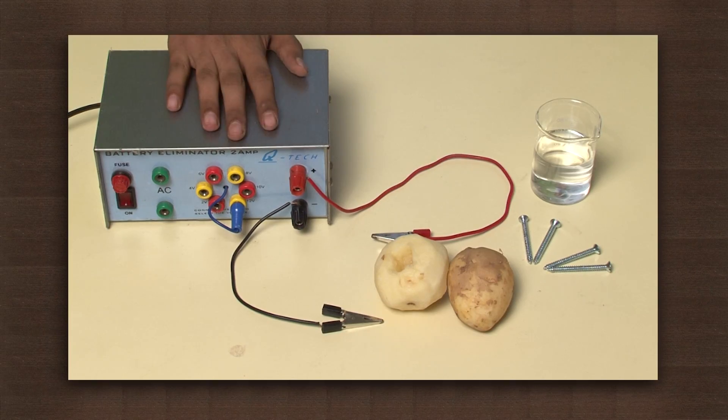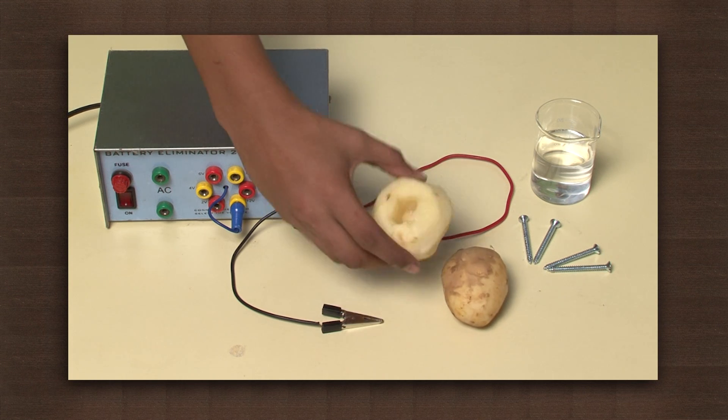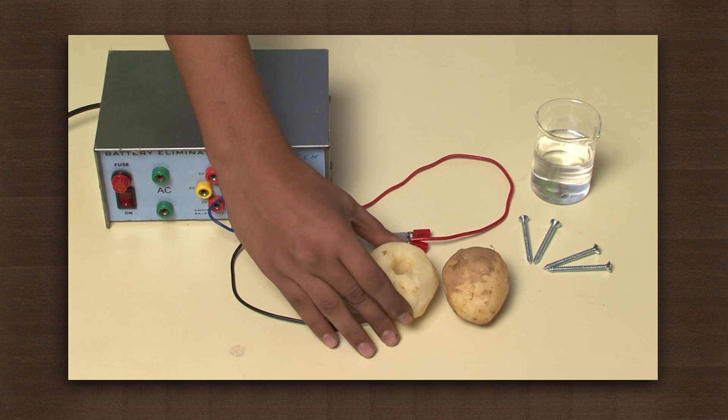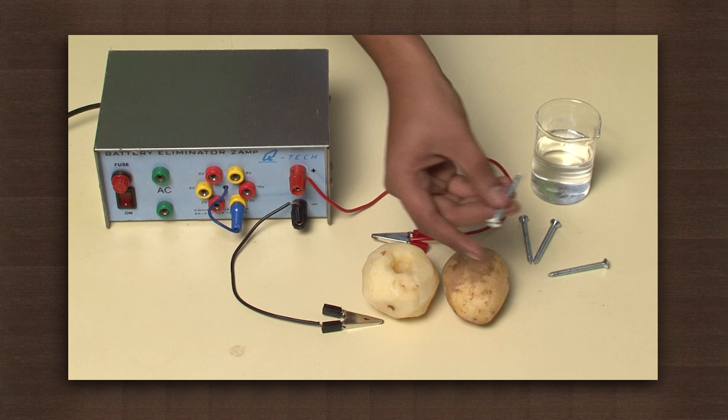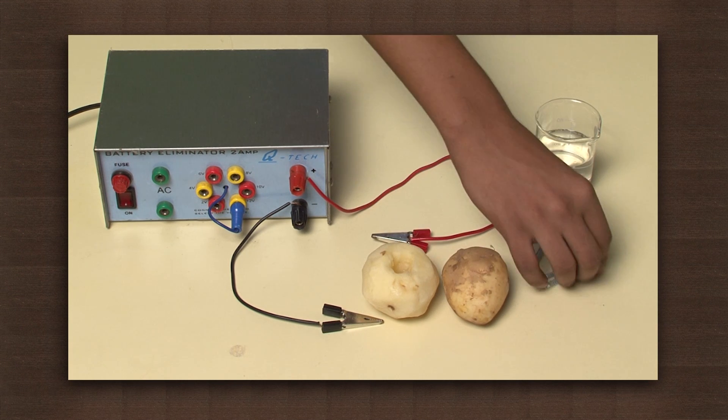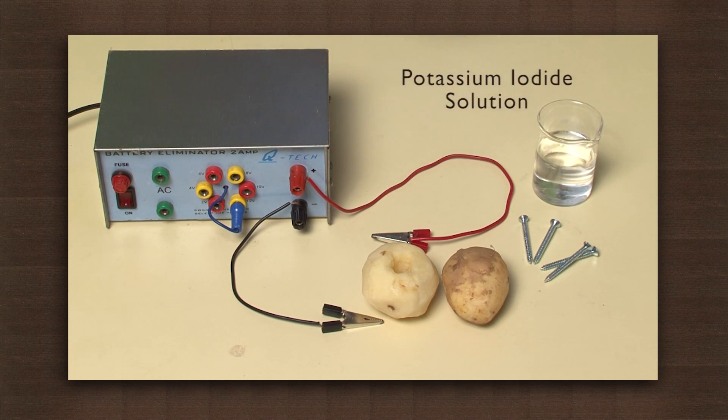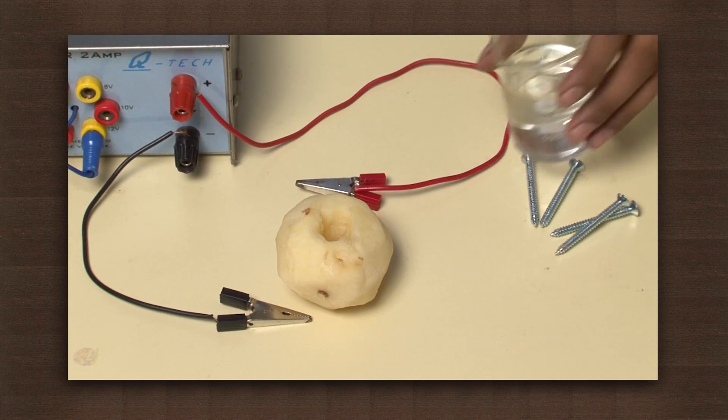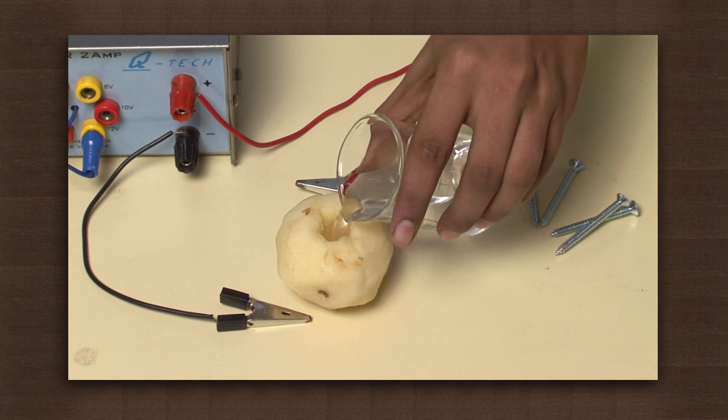For this, we need a battery eliminator, a peeled potato with a hole in the center, nails, and potassium iodide solution. Pour the potassium iodide solution in the center of the potato.